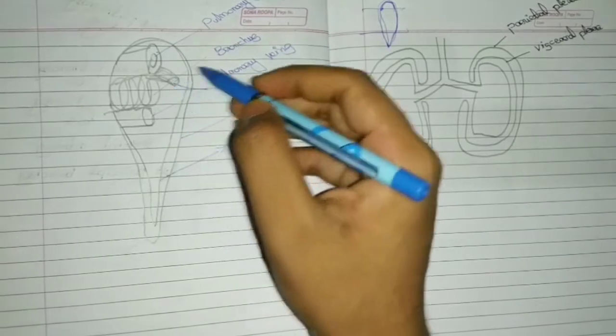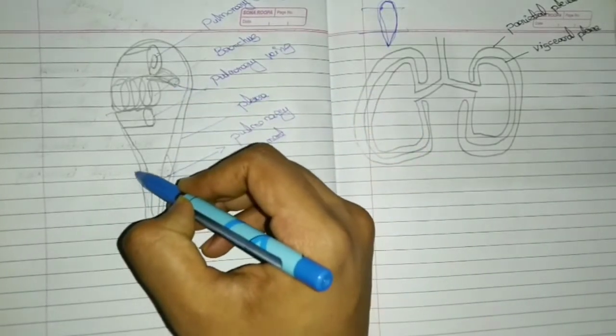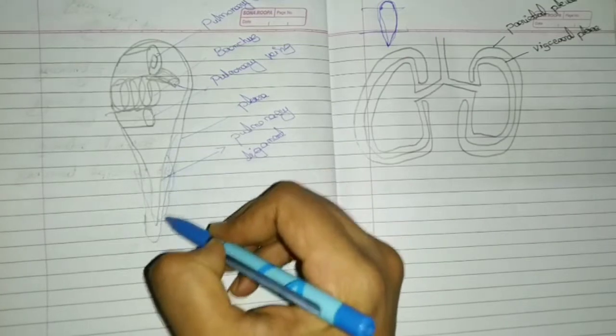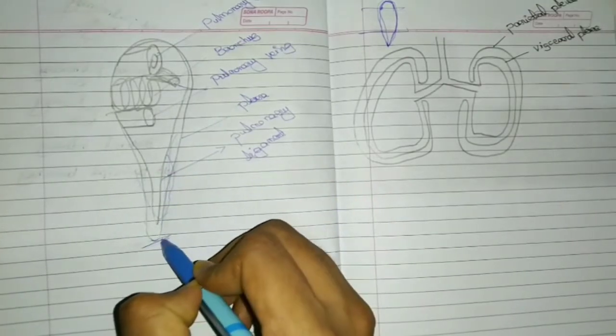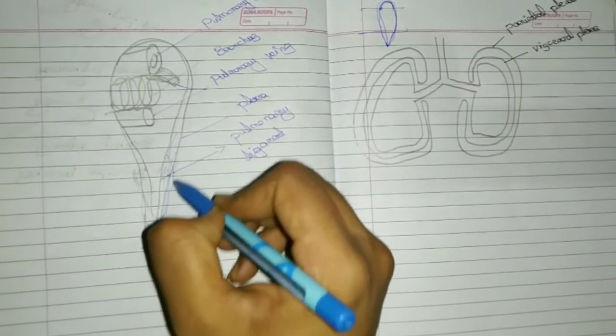This is known as pulmonary ligament. They extend down up to the diaphragm.